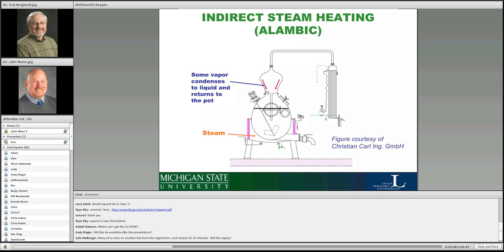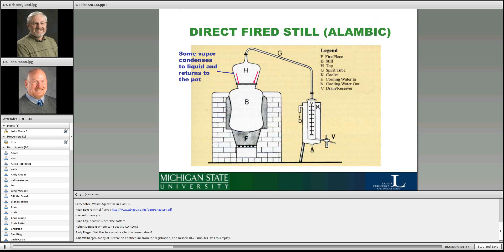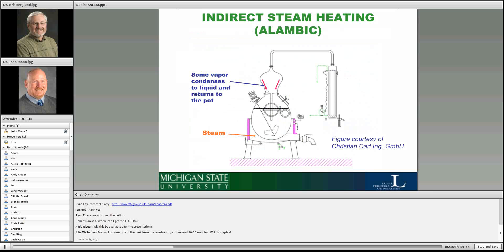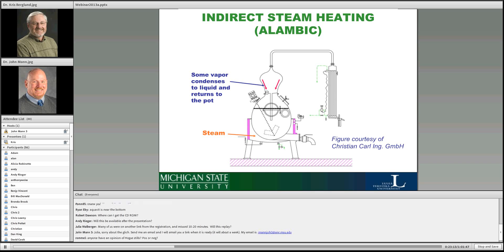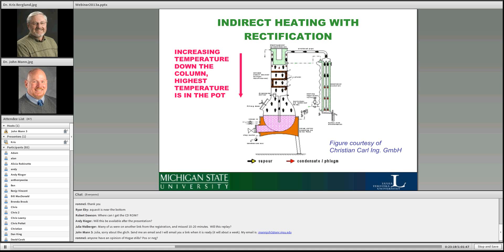The previous slide was direct-flame fired — the cognac style. This style has a boiler — like a Dutch oven — where you have steam in the jacket, so it's a much milder process. Here's another example: when we start putting trays in, this is a schematic of our small still. In order to achieve really high concentrations like those needed for vodka, it requires a minimum of 20 trays — these are large columns to get to vodka-level proof.